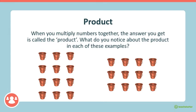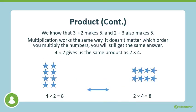When you multiply numbers together, the answer you get is called the product. What do you notice about the product in each of these examples? The product is the same. Both arrays have 12 buckets all together. One array is arranged in four rows of three, and one is arranged in three rows of four. You know that three plus two makes five, and two plus three also makes five. Multiplication works the same way. It doesn't matter which order you multiply the numbers, you will still get the same answer. Four times two gives us the same product as two times four.